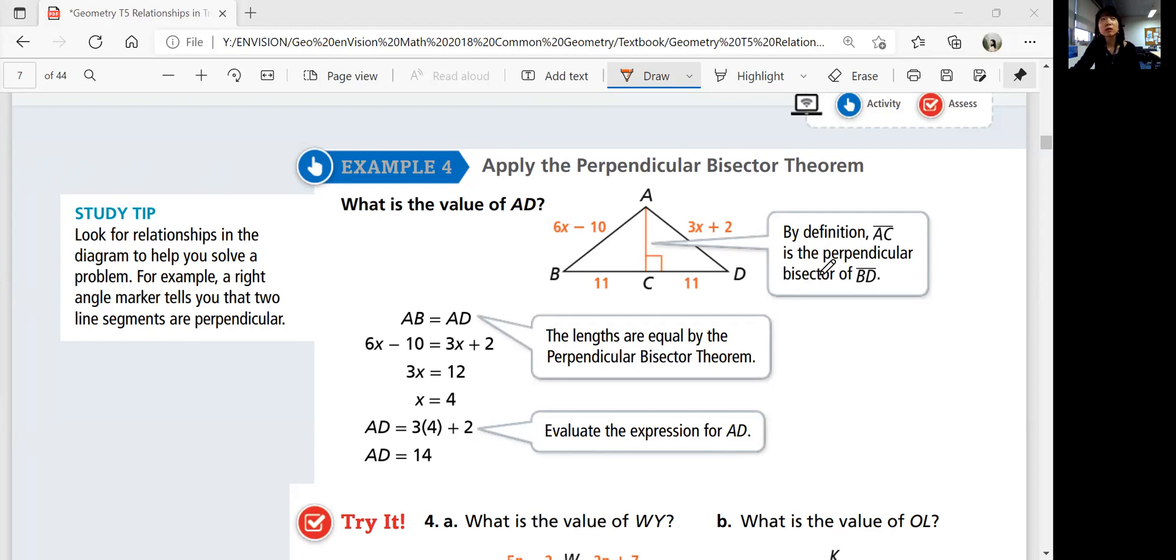Using it, we want to know what the value of AD is. AD is represented as the expression 3x plus 2. And since we know that we're given AB is equal to AD because we have a right angle here at the perpendicular bisector, because BC and CD are congruent.